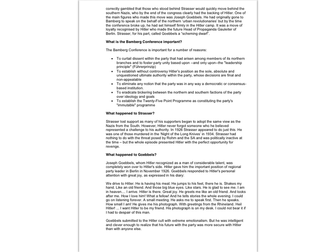Why is the Bamberg Conference so important? The Bamberg Conference is important for a number of reasons: to curtail dissent within the party that had arisen among members of its northern branches and to foster party unity based upon and only upon the leadership principle, sometimes known as the Führer principle; to establish, without controversy, Hitler's position as the sole, absolute, and unquestioned ultimate authority within the party, whose decisions were final and non-appealable; to eliminate any notion that the party was in any way a democratic or consensus-based institution; to eradicate bickering between the northern and southern factions of the party; and finally, to establish a 25-point programme as constituting the party's immutable programme.